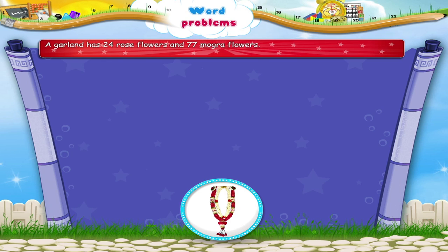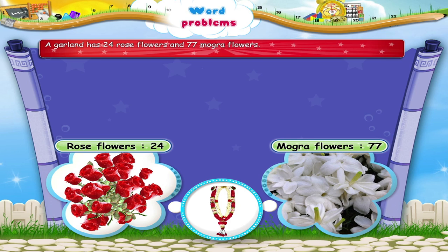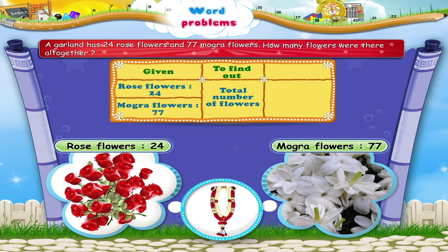A garland has 24 rose flowers and 77 mogra flowers. How many flowers were there altogether? Given: rose flowers — 24, mogra flowers — 77. To find out: total number of flowers.